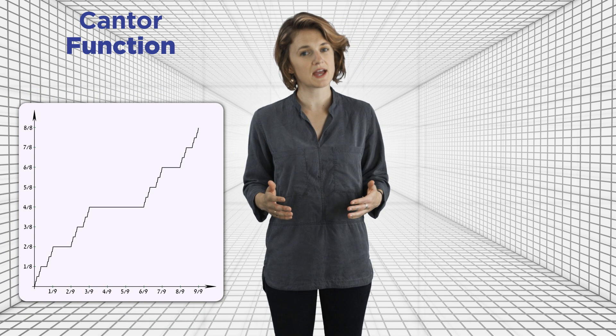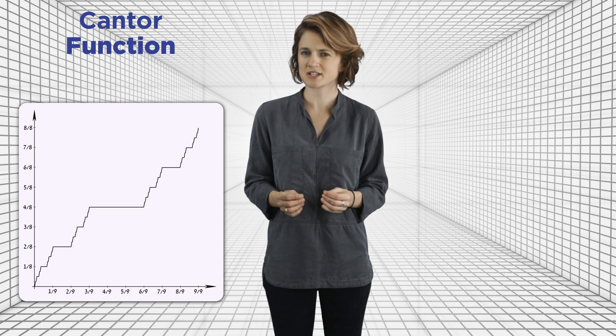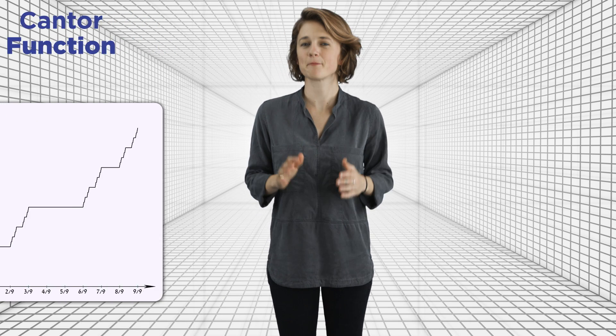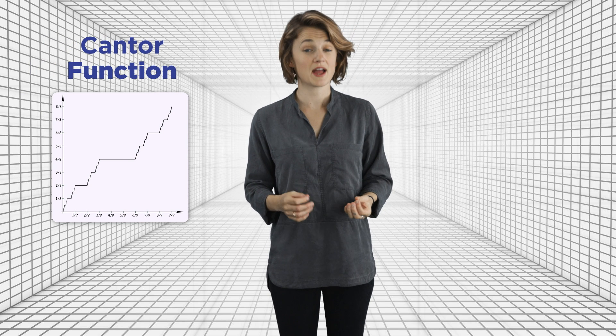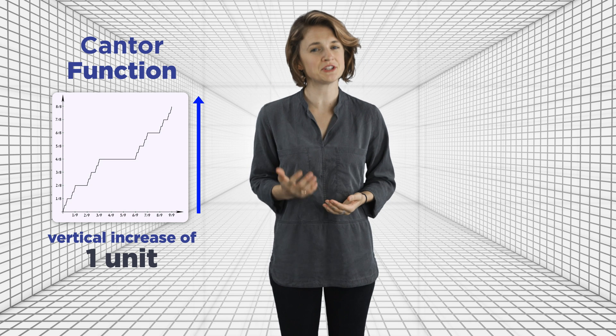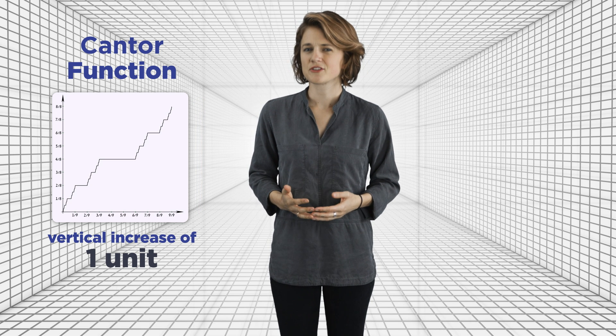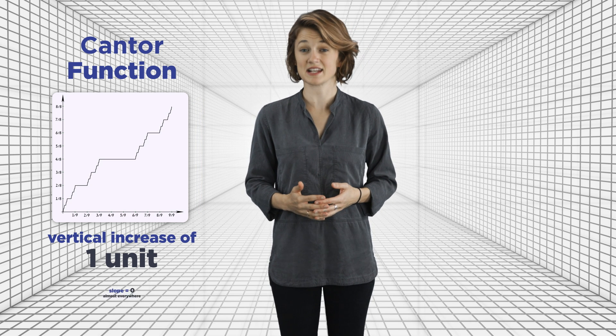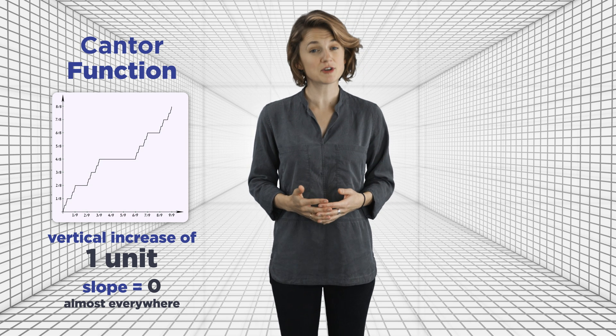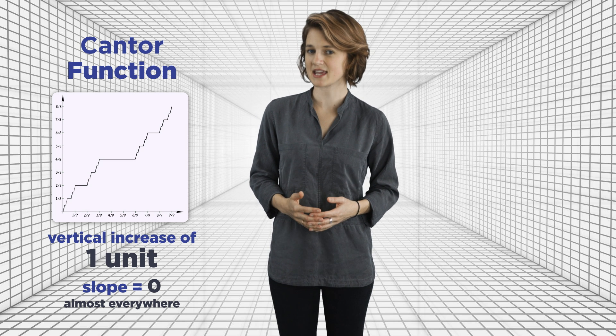We've broken up all the diagonal lines until they're infinitesimal, and we're left with all these flat line segments. Much like the Cantor set, many of the properties of the Cantor function seem in tension with each other. The Cantor function starts at zero and ends at one, so it has a vertical increase of one unit. But the function is flat, that is, it has zero slope, at every point besides the points in the Cantor set.